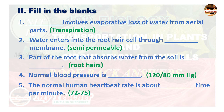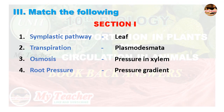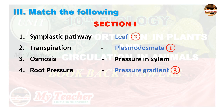Match the following, Section 1: Symplastic pathway — Plasmodesmata; Transpiration — Leaf; Osmosis — Pressure gradient; Root pressure — Pressure in xylem.